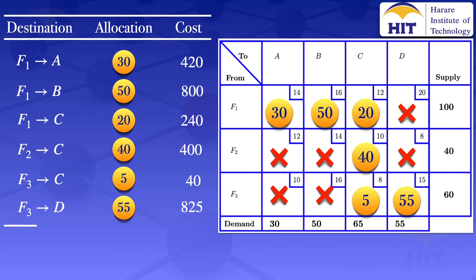We sum all those costs to get the total transportation cost. Adding them together gives us 2725. So the initial basic feasible solution from the northwest corner method gives a total cost of 2725.